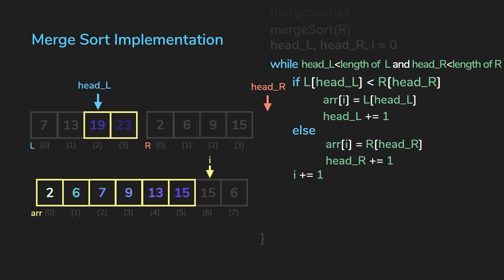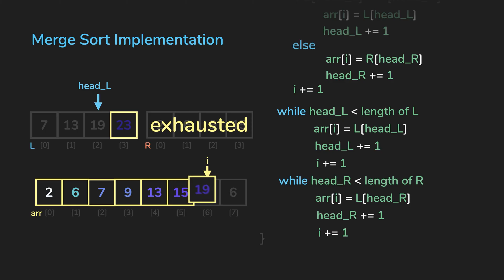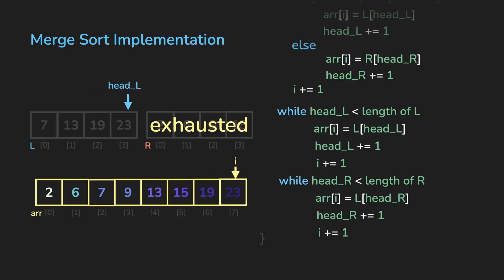If one of the array is exhausted, it means that the other array will still have a few elements left. So we loop through the remaining elements and add it to our original array until you complete it.